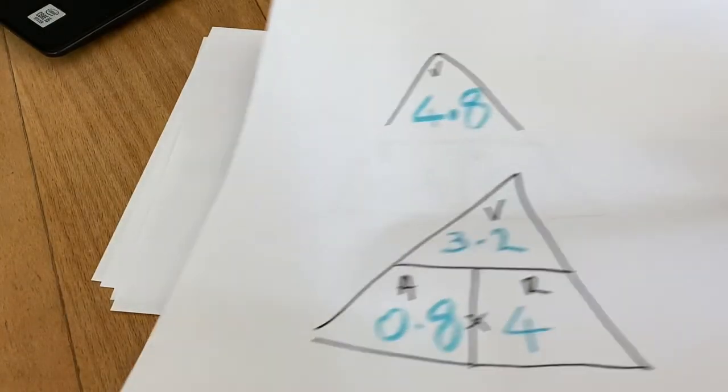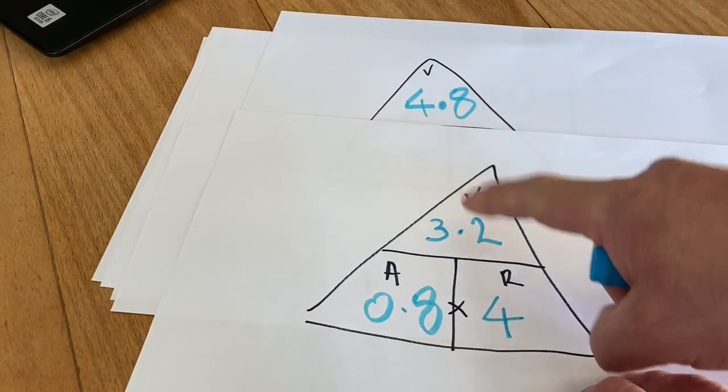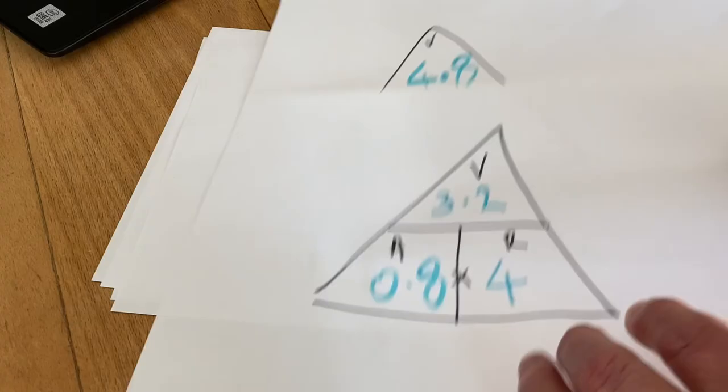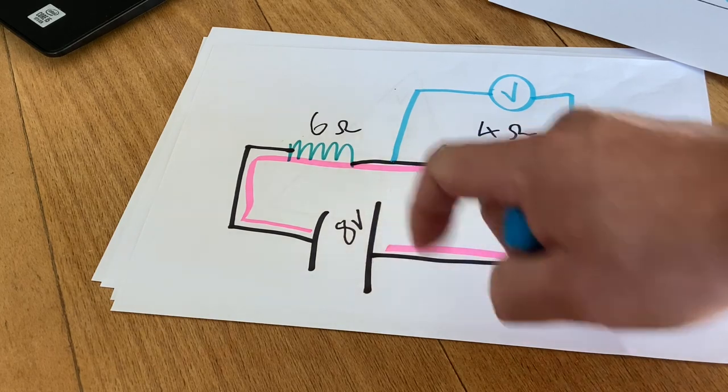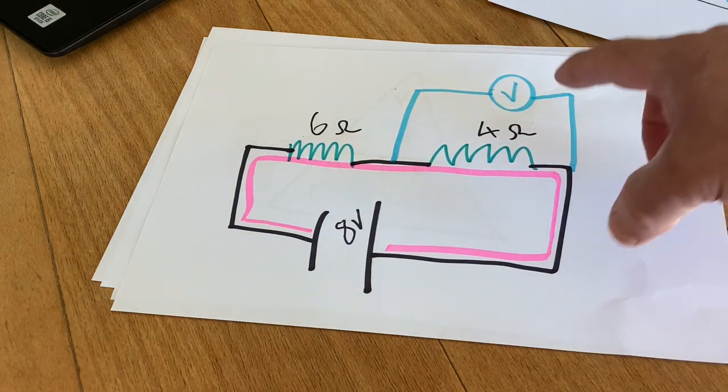So the volt drop across this resistor is 4.8 volts and the volt drop across this resistor is 3.2 volts. So if we add those two together, 4.8 plus 3.2 equals 8. So it adds up to our supply voltage, so we know the answers are correct.